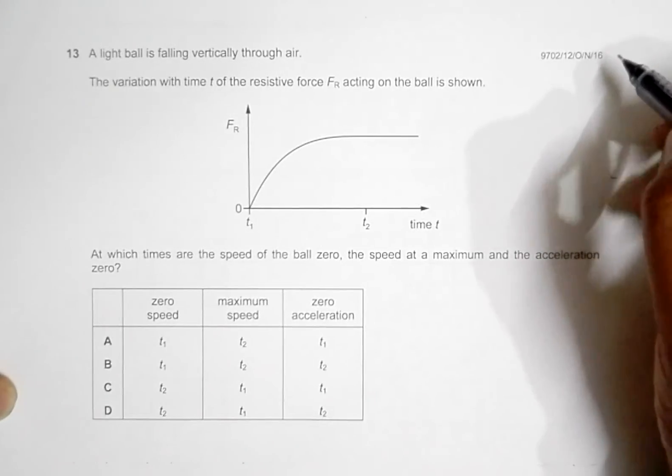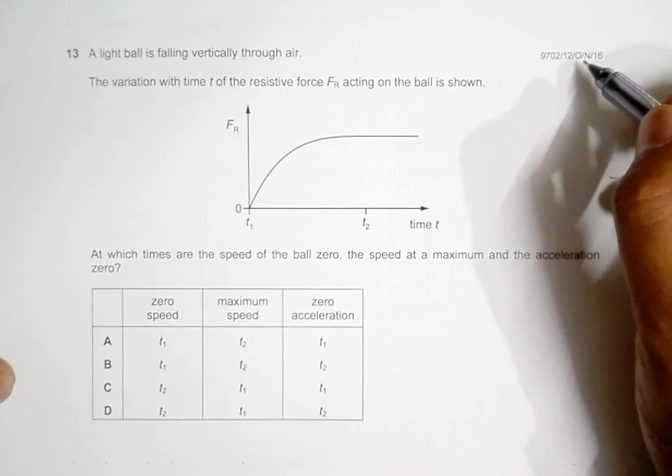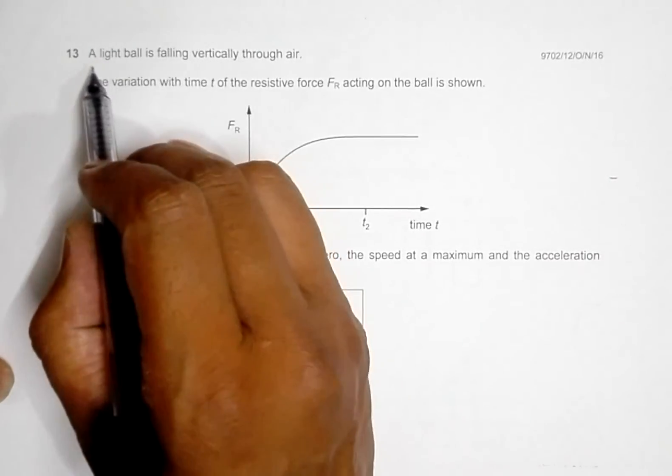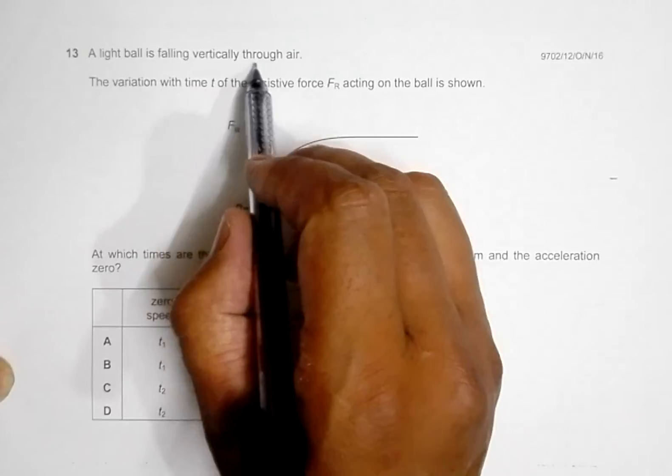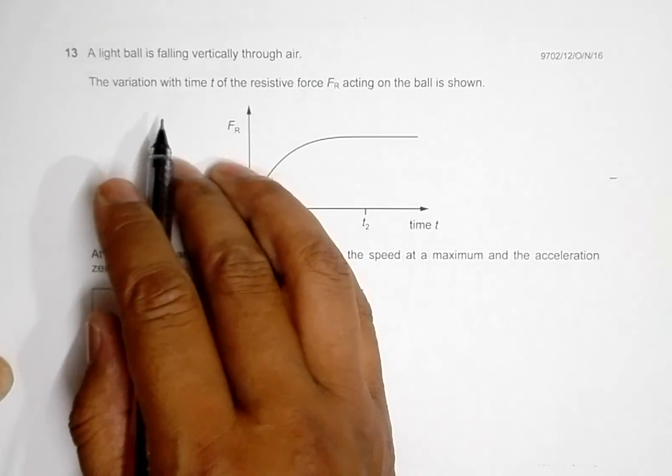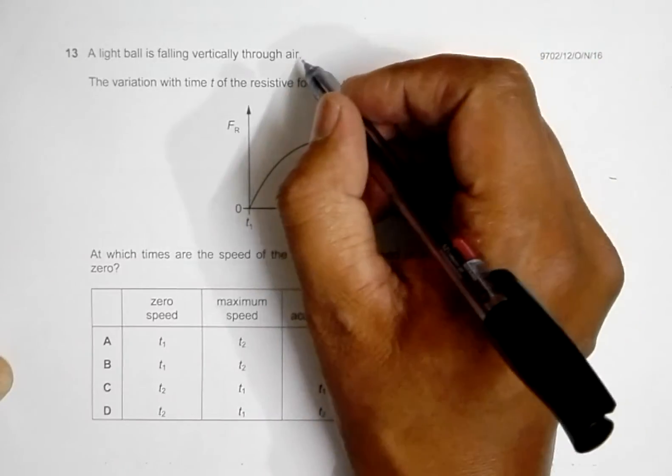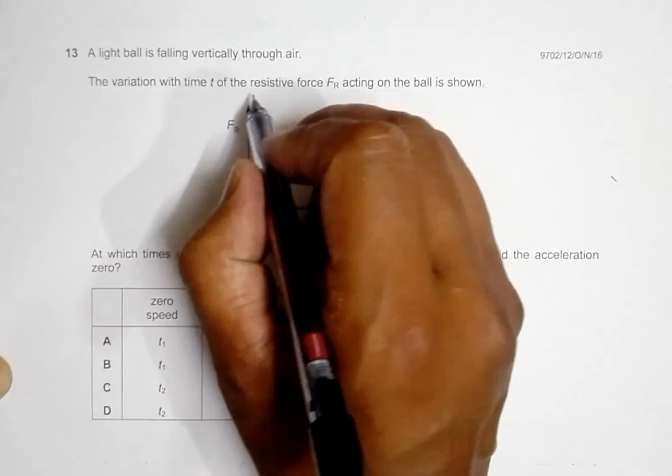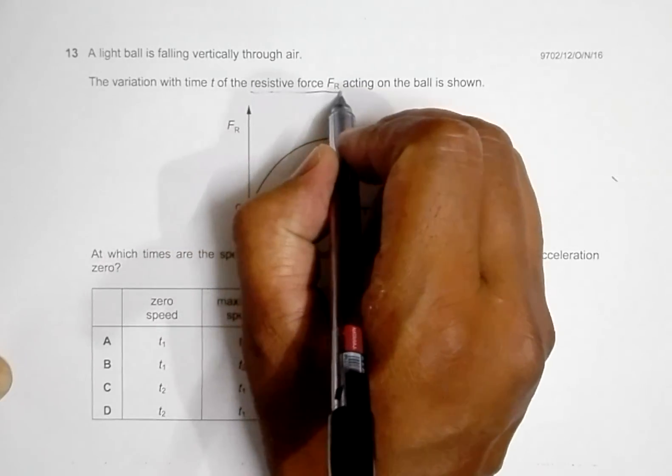This is the question from 2016 October-November Paper 1-2, question number 13. It says that a light ball is falling vertically through air, so that means it is a viscous medium and it experiences some sort of opposing force. The variation with time t of the resistive force FR, which is given here acting on the ball, is shown.